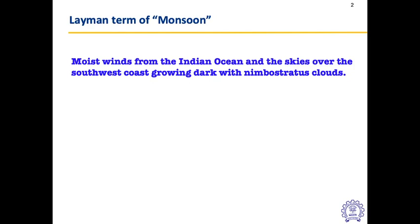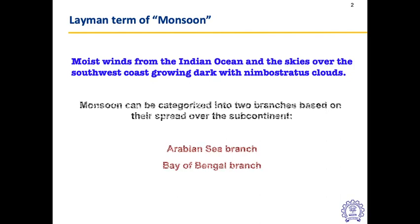Here I'm going to talk about the southwest monsoon, which is characterized by two branches that spread over the Indian subcontinent. These branches are the monsoon currents, initiated by the Arabian Sea branch and the Bay of Bengal branch. We will talk about these in detail in the next few minutes.